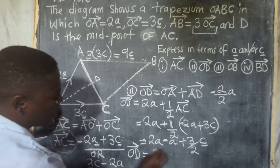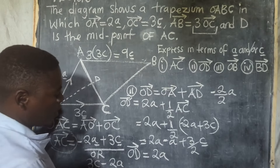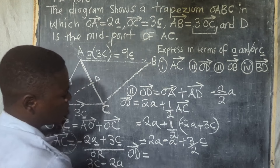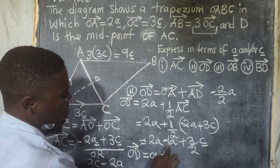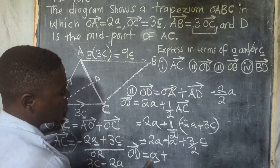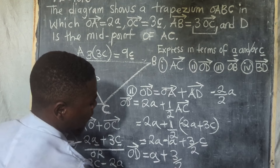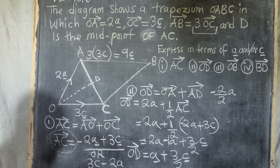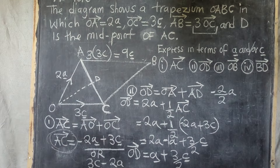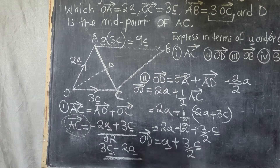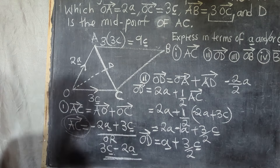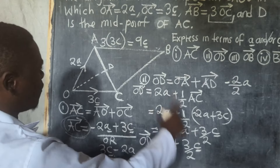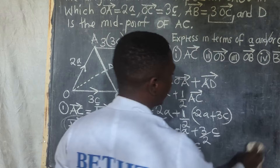Therefore, vector OD is equal to a plus 3/2 c. That is the answer. I believe you are able to see all the procedures. You are able to follow through. So we move to the next part.